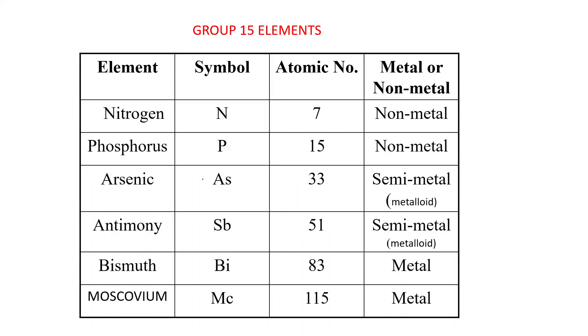These are the elements of Group 15: Nitrogen N, atomic number 7; Phosphorus P, atomic number 15; Arsenic As, atomic number 33; Antimony Sb, atomic number 51; Bismuth Bi, atomic number 83; and Moscovium Mc, atomic number 115. The first two elements, nitrogen and phosphorus, are non-metals. Arsenic and antimony are semi-metals, and bismuth and moscovium are metals.